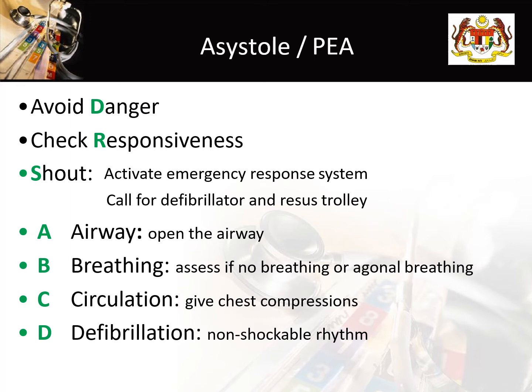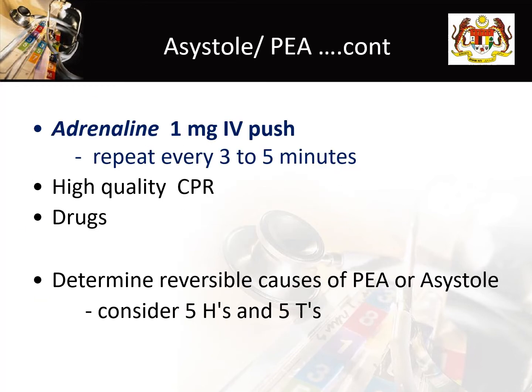In non-shockable rhythm — asystole and PEA — the same DRSABCD algorithm applies, but there is no defibrillation; only drugs. Give IV adrenaline 1 mg IV push every 3 to 5 minutes and resume CPR as soon as possible after every 2-minute rhythm and pulse check. During the CPR process, do not forget to consider the causes of PEA and asystole: the 6H and 5T.